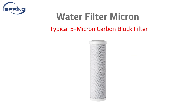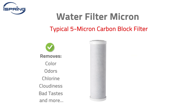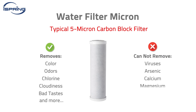Depending on the demand and filtration method for regular drinking water, a typical carbon block filter is rated at about 5 microns and is suitable for removing the most visible particles.